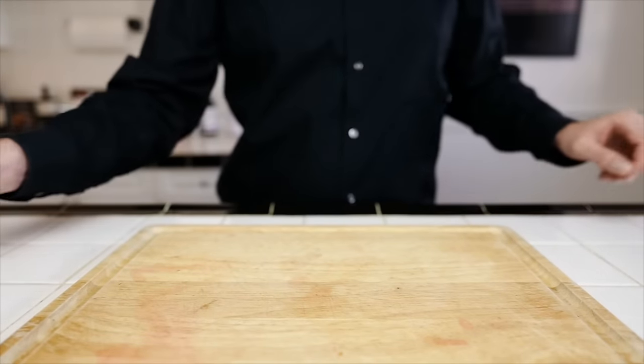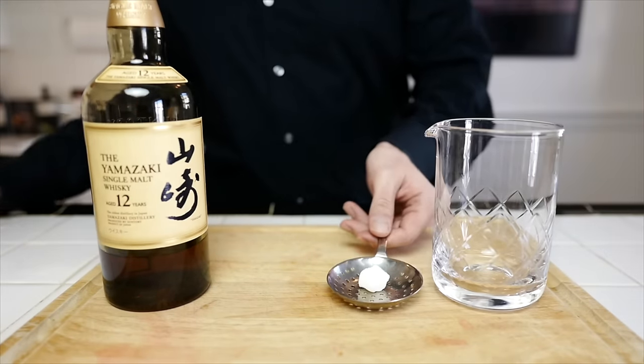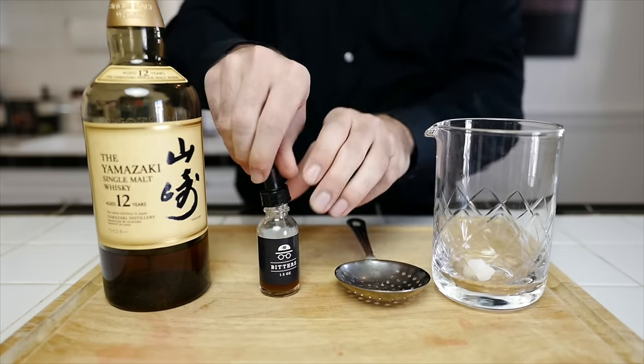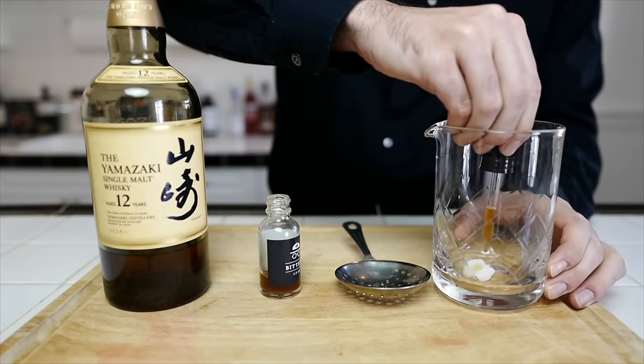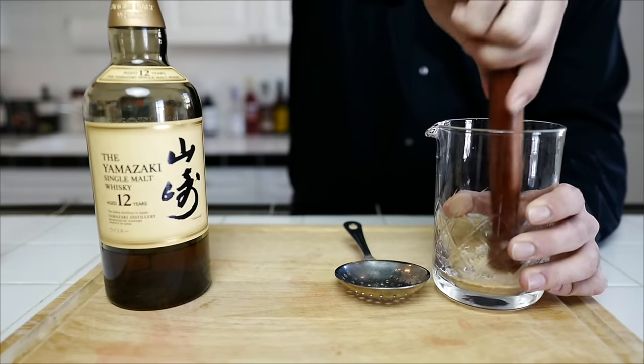Now let's prepare a classic old fashioned. Traditionally, a cocktail was defined as a mixture of spirits, sugar, and bitters. Here we're going to put some orange bitters on top of the sugar cube. Muddle that together.